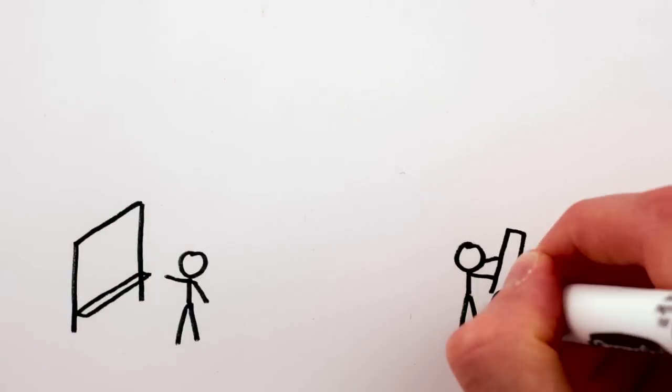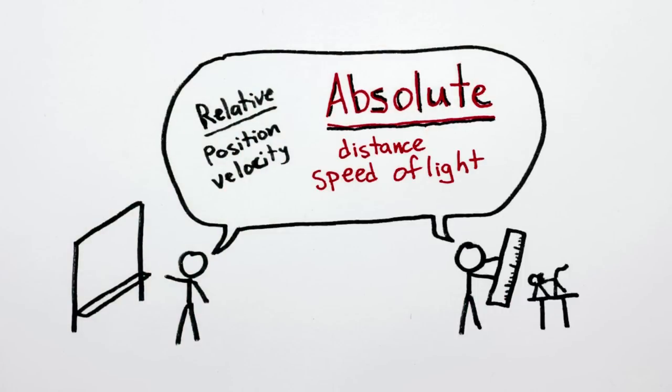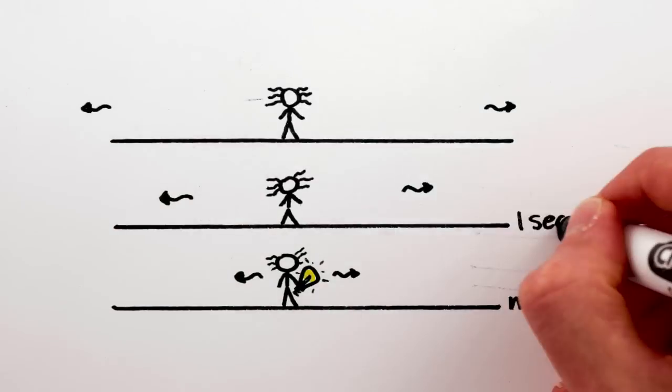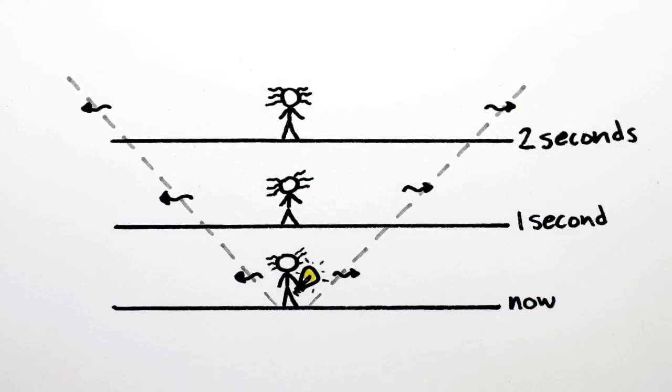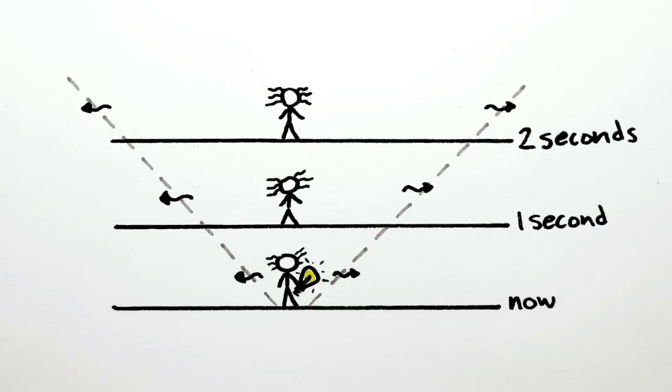Before Einstein was even born, physicists showed that the speed of light was one of those absolute things which can't be changed by a switcheroo, so any switcheroo we do has to keep light moving at the same speed. But then it's obvious that we can't do our sliding switcheroo at all, which means we can't explain how anything other than light can move.